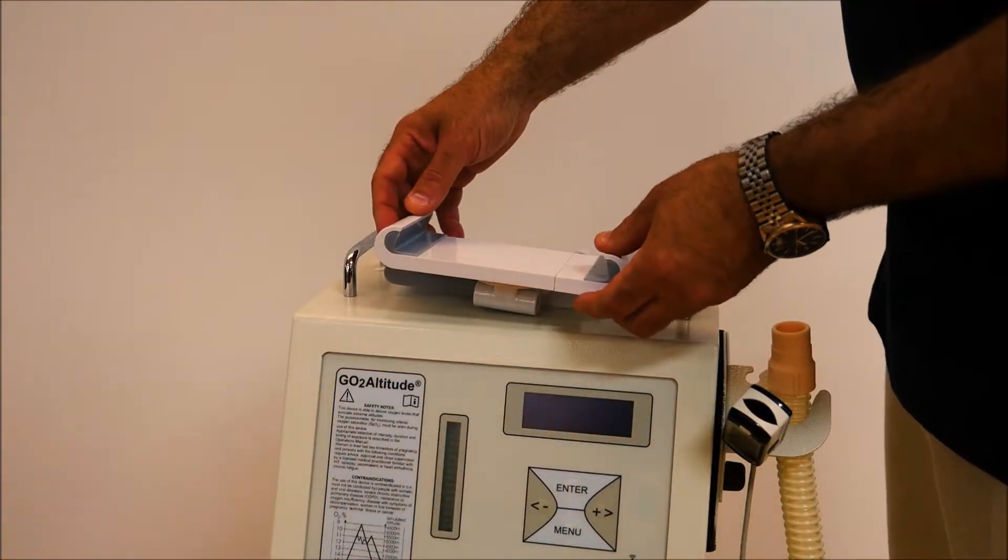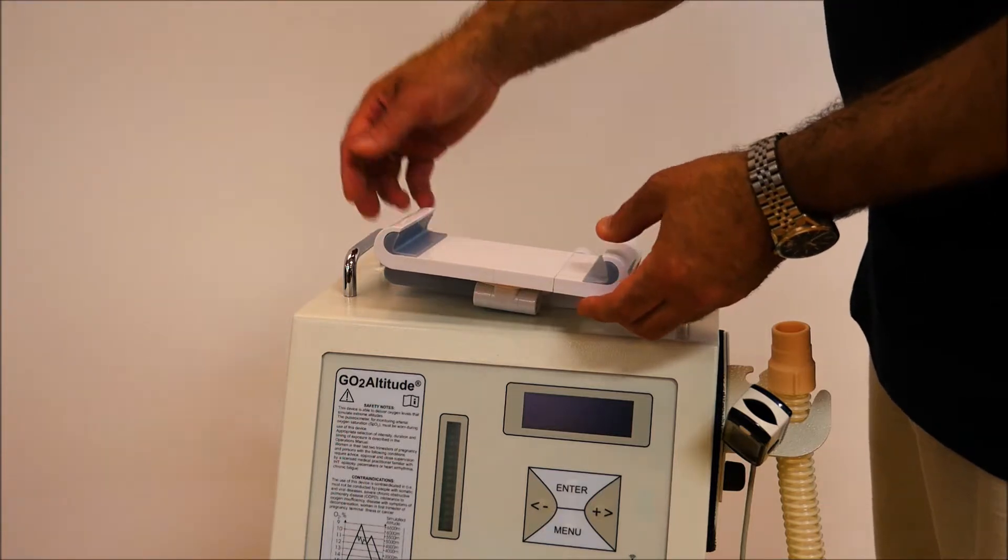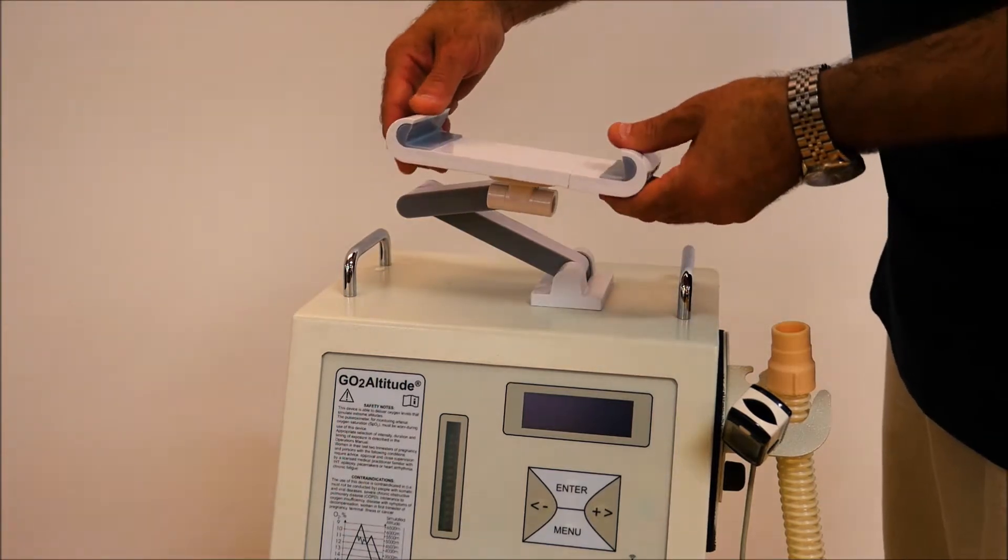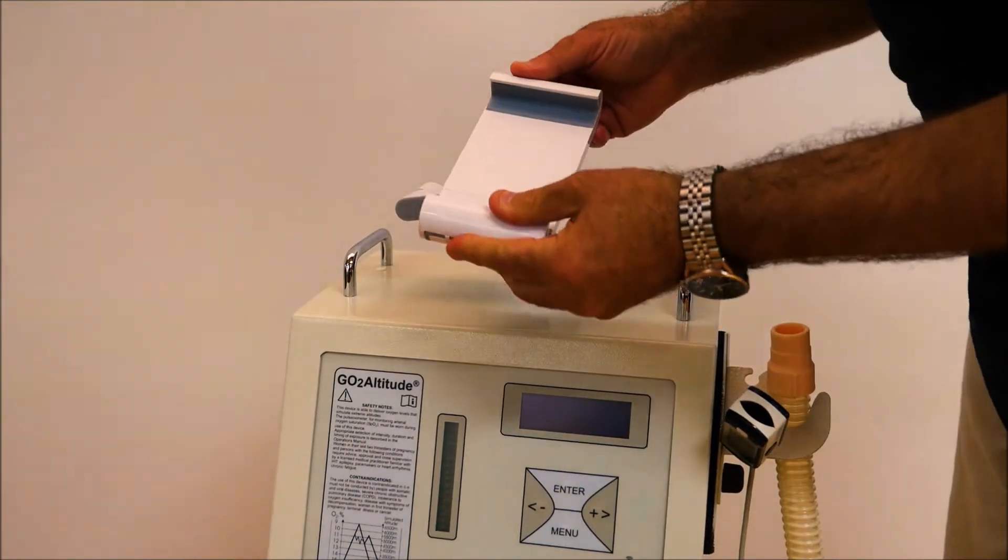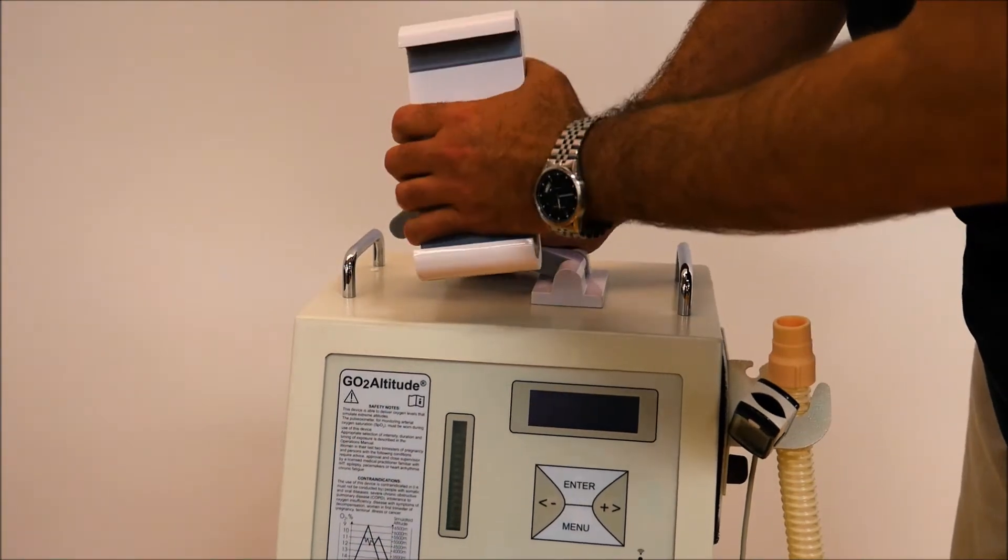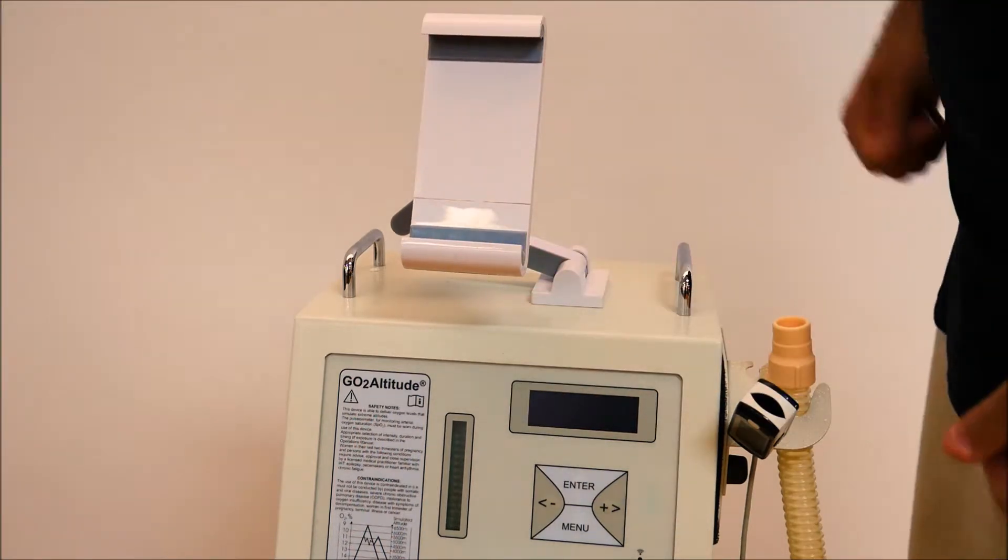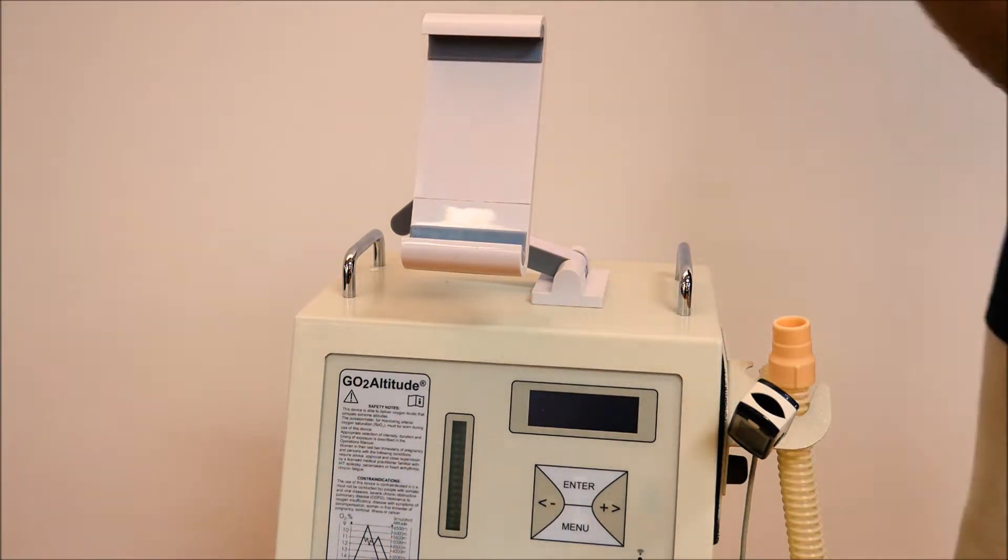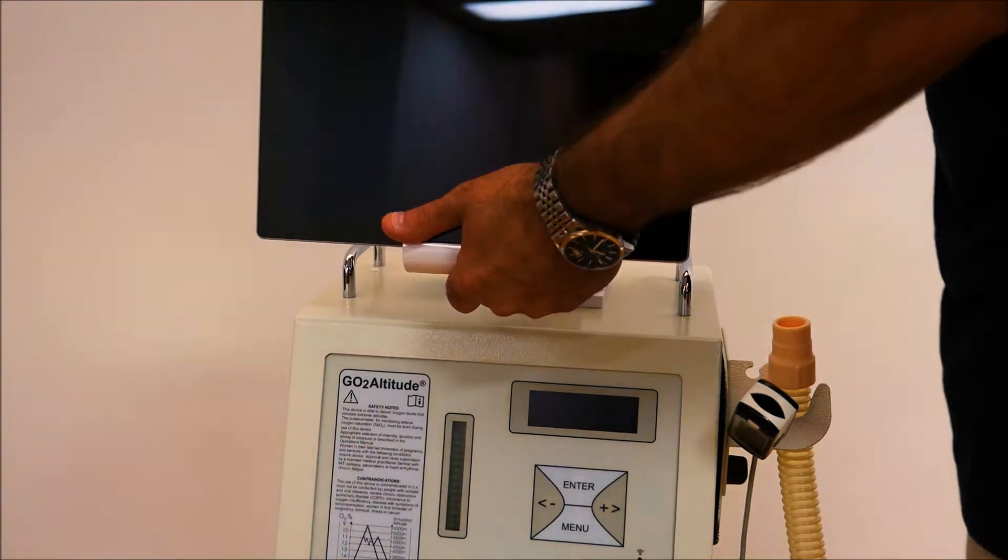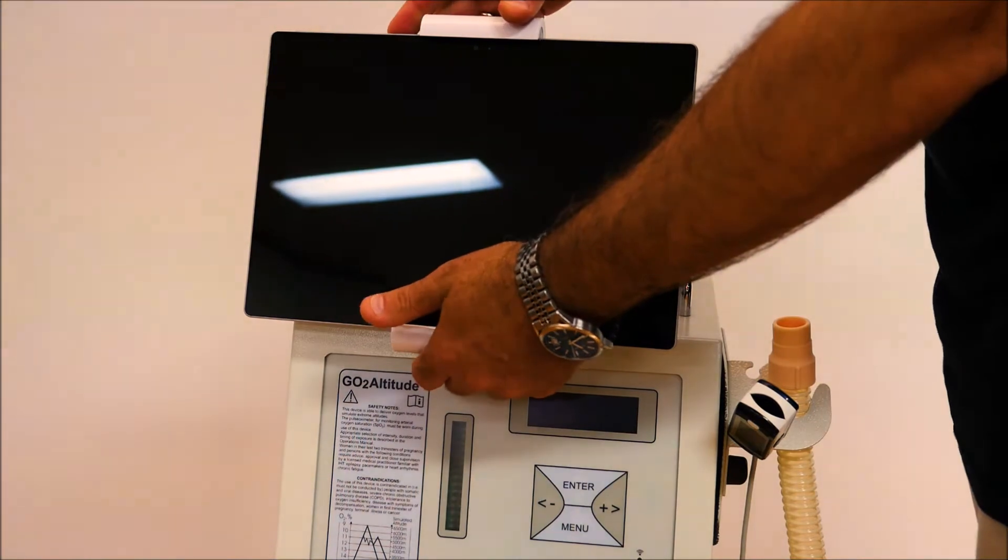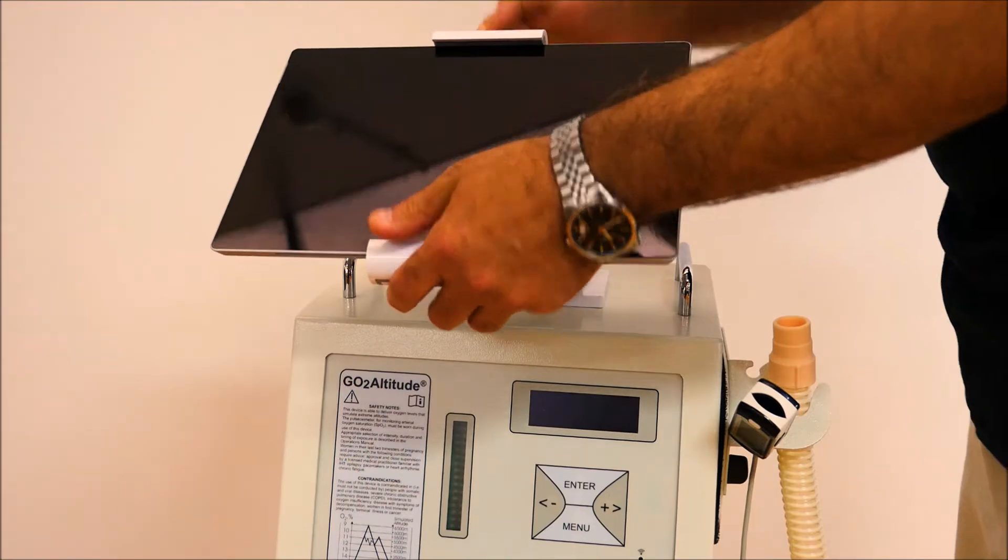In order to mount the supplied tablet PC, Microsoft Surface, we need to erect this mounting facility which is done like that. This facility gives you freedom to mount the tablet PC in a most convenient and suitable position. Bring the computer in and install it like that. You can adjust it during operation into any suitable position.